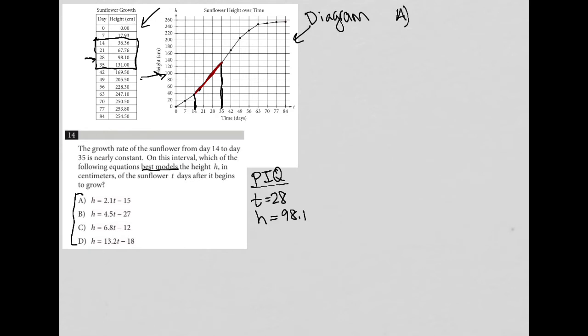Starting with choice A, we have h equals 2.1t minus 15. If I plug in the information I'm testing, 98.1 equals 2.1 times 28 minus 15. Is it true that 2.1 times 28 minus 15 equals or is closely associated with 98.1? What I get is 43.8, so no. This is so far off from 98.1 that I'm certain A can be crossed out.